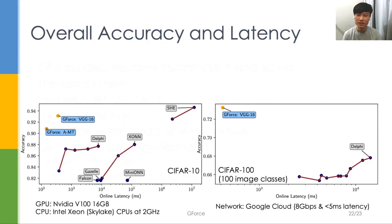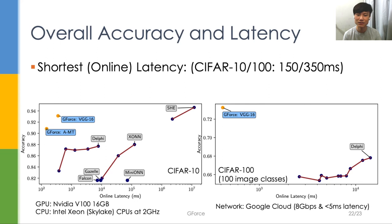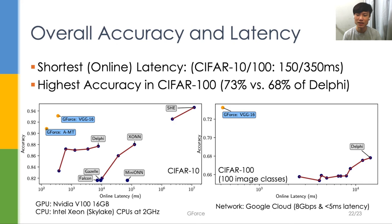Here's our experimental results and experimental setup. We achieve the shortest online latency in both CIFAR-10 and CIFAR-100, where the client can obtain the query results in less than 0.4 seconds. Moreover, we obtain the highest accuracy, 93%, in CIFAR-100, which is at least 5 percentage points higher than the prior best.